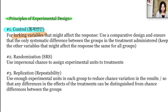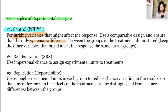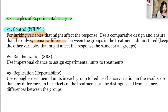Ensure that the only systematic difference between the groups is the treatment administered. In other words, you need to keep the other variables that might affect the response — which is the same as the lurking variable — the same for all groups. This is how you use control in your experimental design.